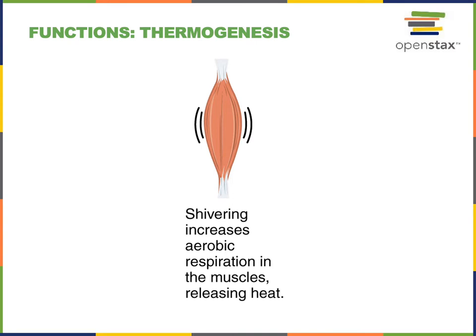Another major function of the muscular system is thermogenesis or heat production. Metabolism of cells will generate heat and the majority of the mass of the body is muscle mass. As muscles contract their metabolic rate increases, and shivering is a mechanism that increases the metabolic rate of skeletal muscles primarily for the function of increasing the temperature of the body.